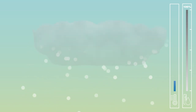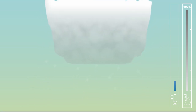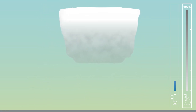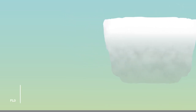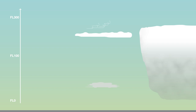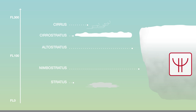In a stable atmosphere, particles slow down and the cloud spreads. Depending on their altitude and height, different types of stratiform clouds exist. With negative temperatures, icing can occur when entering these stratiform clouds.